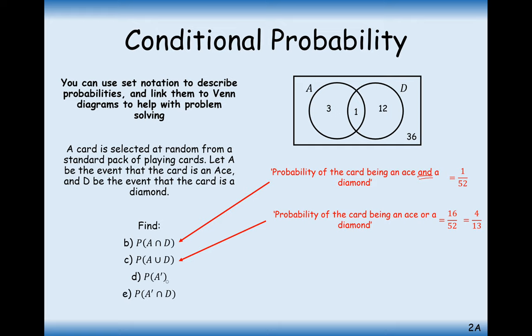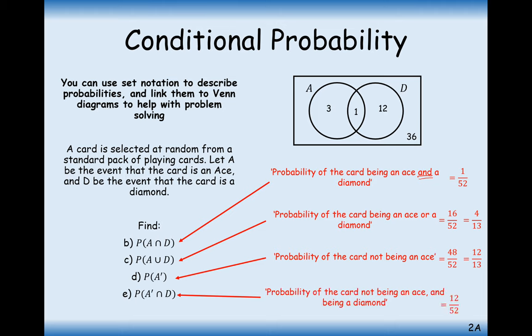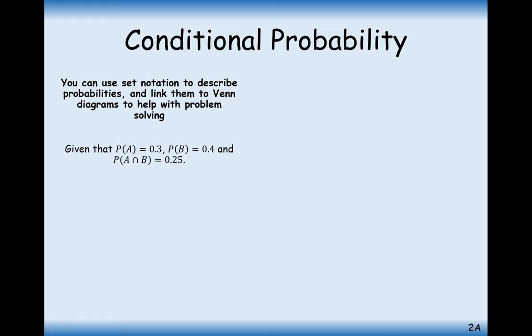Part D, find the probability that it is not A, so it's not an ace. That's just all the cards that are not aces, and there are 48 out of 52 of them. The next question is find the probability that it's not an ace and it's a diamond. That's 12 cards out of 52, or in other words, 3 out of 13. It was just this region here that were diamonds but not aces.